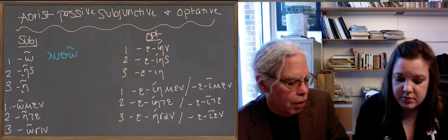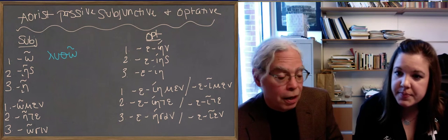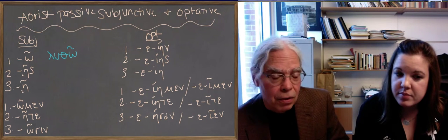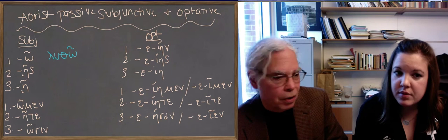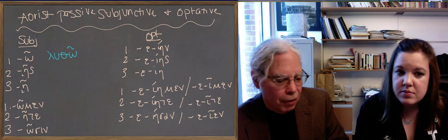So there's a circumflex throughout on the eta or the omega in the aorist passive subjunctive. It's a very distinctive form. It doesn't have the endings of the aorist passive indicative, which are those of a past tense: nu, sigma, nothing, men, ten, and so on.